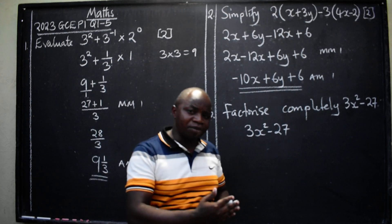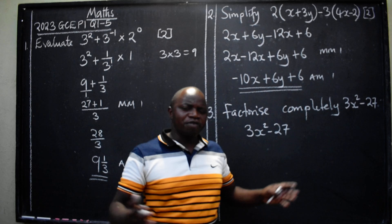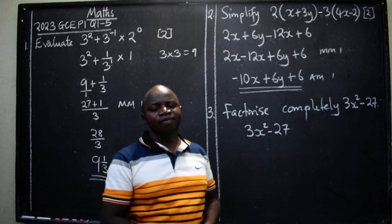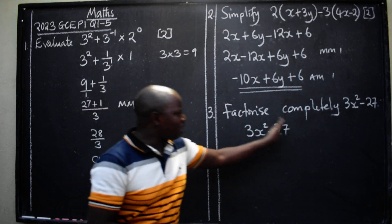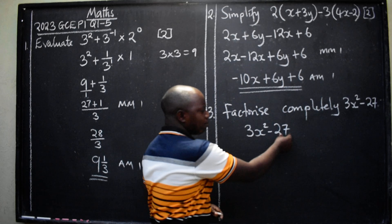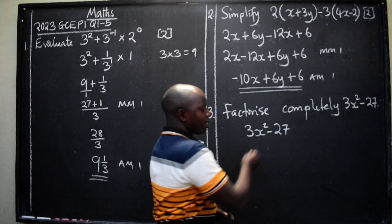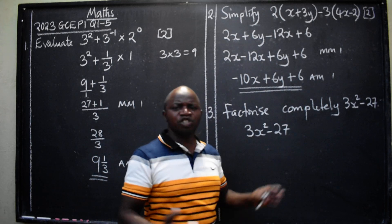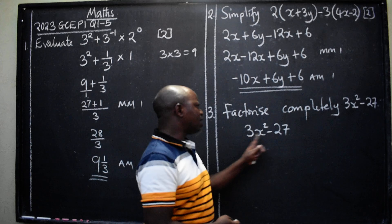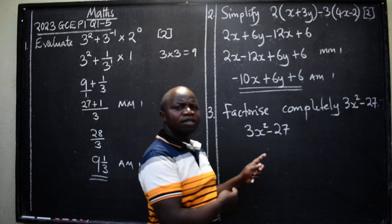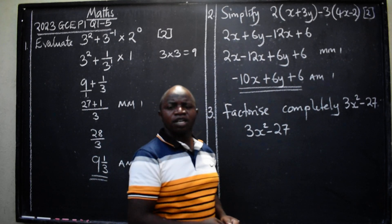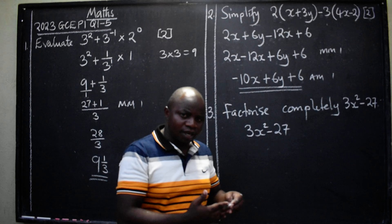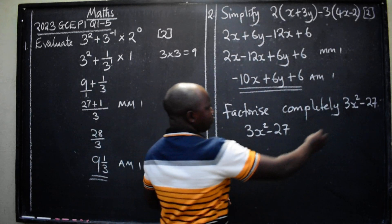When told to factorize, remember the four types: common factorization, difference of two squares, quadratic factorization, and grouping. Here we have two terms separated by a minus. This looks like difference of two squares — but 3 and 27 cannot be expressed directly as perfect squares, so we must do common factorization first.